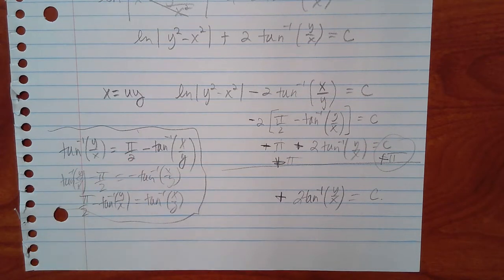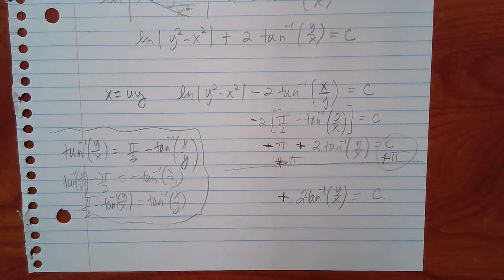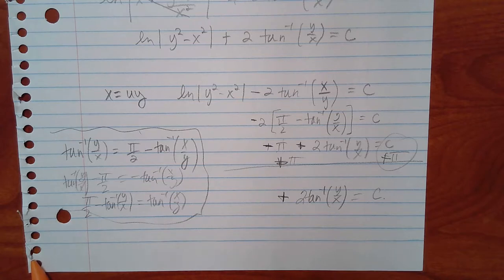Nobody thinks of things like this automatically. I literally went and looked it up — I saw it had y/x on one side but x/y on the other and searched for a way to convert, and I found this property. Are there any other problems you might have had questions over?